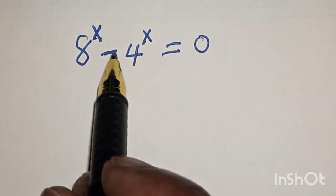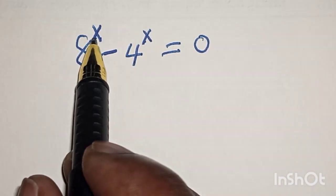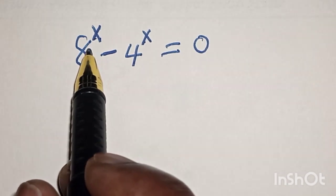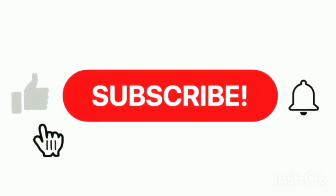Hello, welcome to Magist. In this class we quickly want to find the value of x from this equation: 8 raised to power x minus 4 raised to power x is equal to 0.